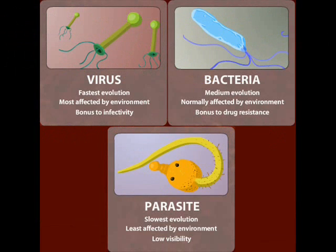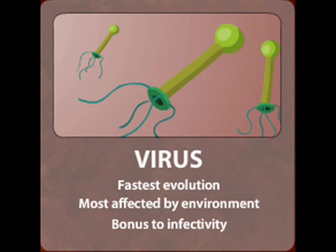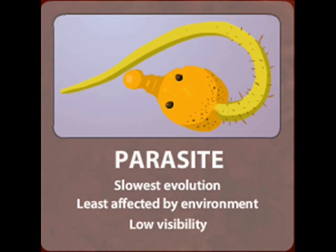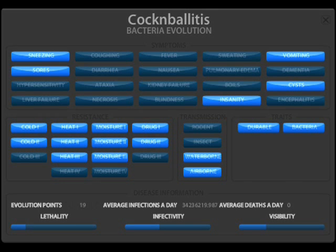From the start, you have the option to choose a disease class between virus, bacteria, and parasite, each providing their own pros and cons in subcategories such as infectability, evolution speed, drug resistance, effects from the environment, and visibility. There are many options to aid with the evolving of the killer disease which you can control from the disease tab.